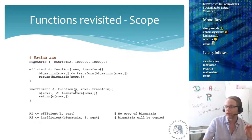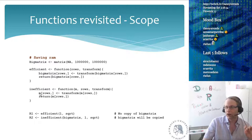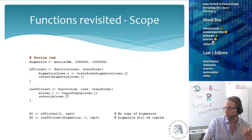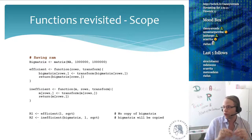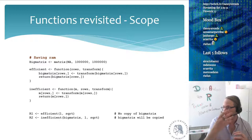The inefficient way is to define a function that takes `m` — the big matrix — as an input parameter. Now when we call the function and do the same transformation but assign to the rows of `m`, at that point the big matrix gets copied. Instead of using 5 gigs of RAM, we suddenly use 10 gigs. That is something we want to avoid, so there is a legitimate reason to sometimes read or write variables in the parent scope.